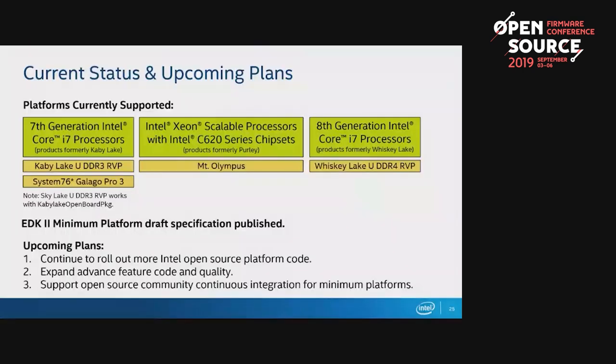Our three main imperatives at this moment: first, continue to roll out more Intel open source platform code — primarily focusing on getting open board packages out. Second, expand the advanced feature code and quality — keep modularizing chunks of our internal platforms, moving them out to advanced features and pulling them back in using the min platform model. Third, support open source community continuous integration. At Intel, everything on the EDK2 and EDK2 platforms mailing list is being run through CI inside the company — GCC5, Visual Studio 2015, Xcode, and Clang builds — but none of that's publicly visible. We want to move that into the open in the next few weeks.